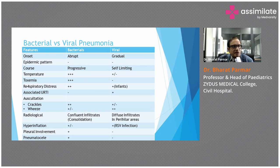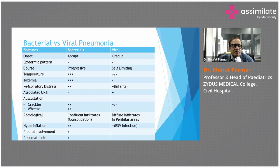What is the difference between bacterial pneumonia and viral pneumonia? In bacterial pneumonia, the onset is abrupt, the course is progressive, temperature is high-grade, the child is toxic with toxemia, respiratory distress is present, and it is not associated with upper respiratory infection. On auscultation, there are crepitations and wheeze. On radiology, there is lobar opacity, hyperinflation may be present, pleural involvement occurs, and pneumatocoeles are present in bacterial pneumonia.